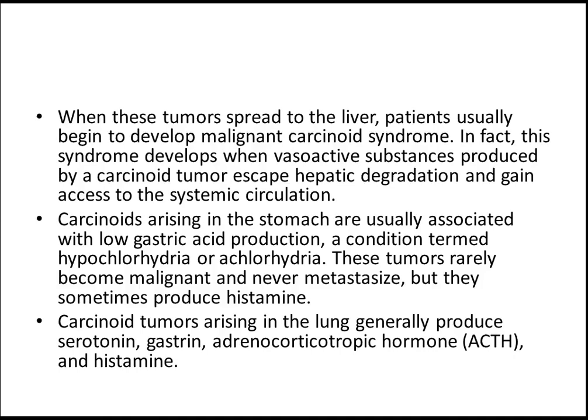Carcinoids arising in the stomach are usually associated with low gastric acid production, a condition termed hypochlorohydria or achlorohydria. These tumours rarely become malignant and never metastasize, but they sometimes produce histamine. If carcinoid tumours arise from a different place, they have different clinical features. Carcinoid tumours arising in the lung generally produce serotonin, gastrin, ACTH and histamine.